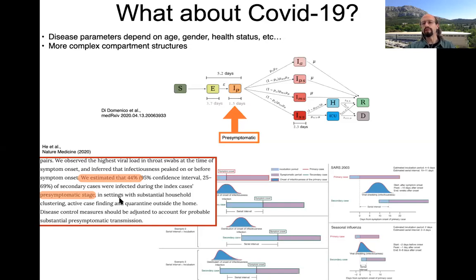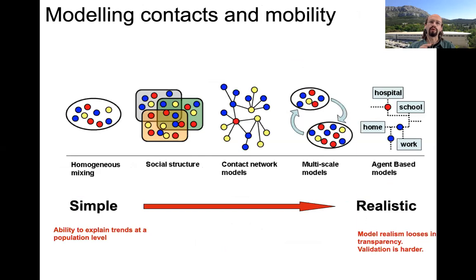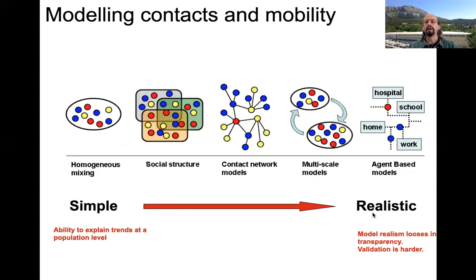Competing models all use the fact of pre-symptomatic infection and asymptomatic transmission, then differ depending on the specific question. I'll now focus on modeling how propagation occurs between hosts due to mobility and contact patterns. The homogeneous mixing hypothesis makes models tractable, but real contact structure is much more complex. You can go from simple to very realistic with agent-based modeling, but those are less transparent.